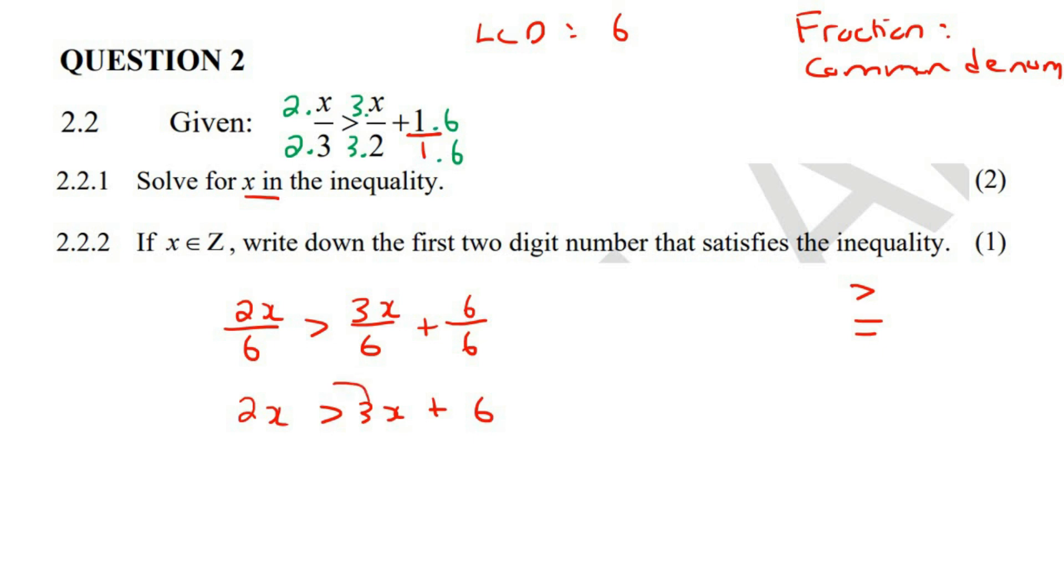So you could take all the x's left, or you could take all of the x's right. It's up to you. I'm going to take all of the x's to the left, so we end up with 2x. Oh, there's something very interesting coming up here now. So 2x minus 3x is greater than 6. Now, what is 2 minus 3? It's negative 1.